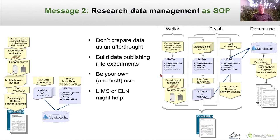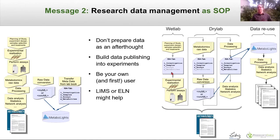The second message is that research data management really should be a standard operating procedure in the lab. Typically you would have people designing the experiment, running the experiment, looking at the data, writing up the paper, and then the journal asking you to submit supplemental information — so you go back to the raw data, convert it, go to the lab book, and try to put together the experimental metadata. But data shouldn't be provided as an afterthought. It should be built into the entire process, and you should be your own first user because you have to prepare the data afterwards anyway.